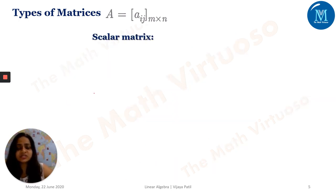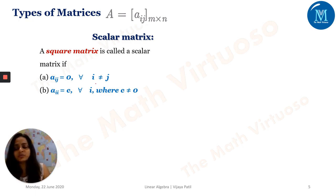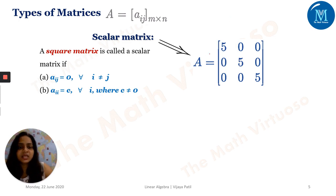Next is the scalar matrix, which is a square matrix with two conditions. First, Aᵢⱼ = 0 for all i ≠ j — meaning all non-diagonal elements are zero. Second, Aᵢᵢ = c for all i, where c is not equal to zero — meaning all diagonal elements are equal to some constant c. For example, the matrix with 5, 0, 0 / 0, 5, 0 / 0, 0, 5 is a scalar matrix.